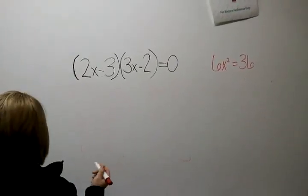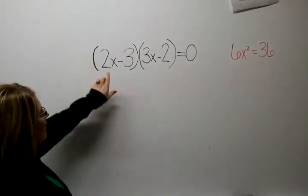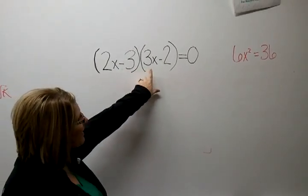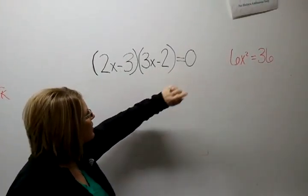Okay, so our problems that we're going to be solving today are 2x minus 3 times 3x minus 2 equals zero.